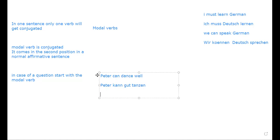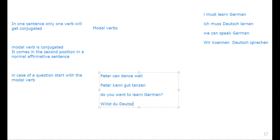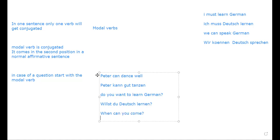Now let us discuss questions. In a yes/no question with a modal verb, you start with the modal verb. For example, 'Do you want to learn?' — the modal verb comes first, conjugated as per the subject, and the second verb 'lernen' goes to the end without being conjugated. Another example: 'Can you come?' — the modal starts the question, and the second verb goes to the end.